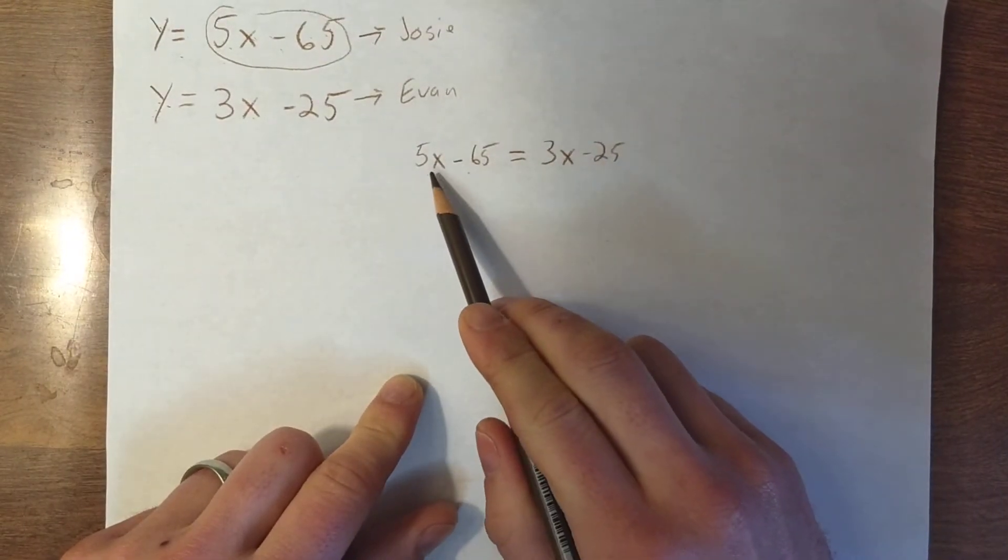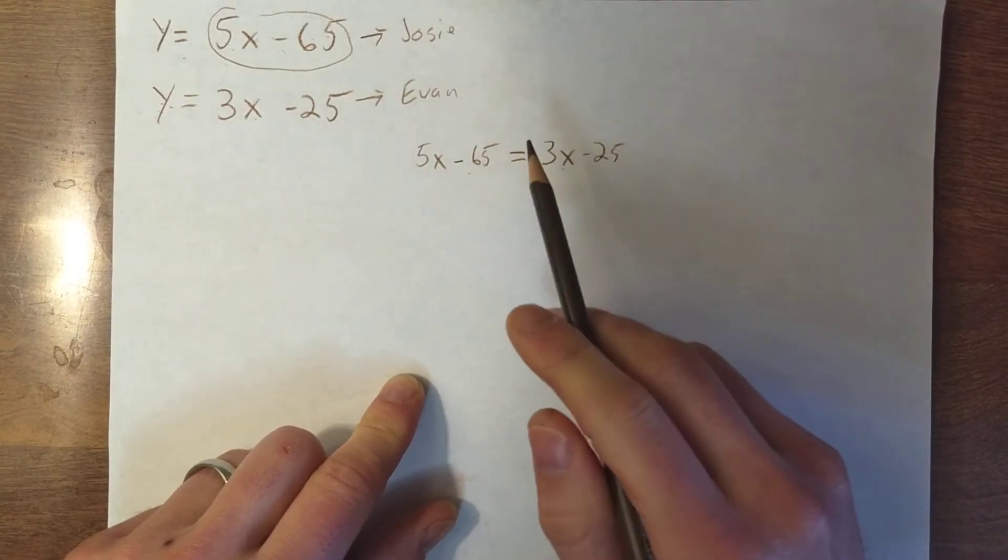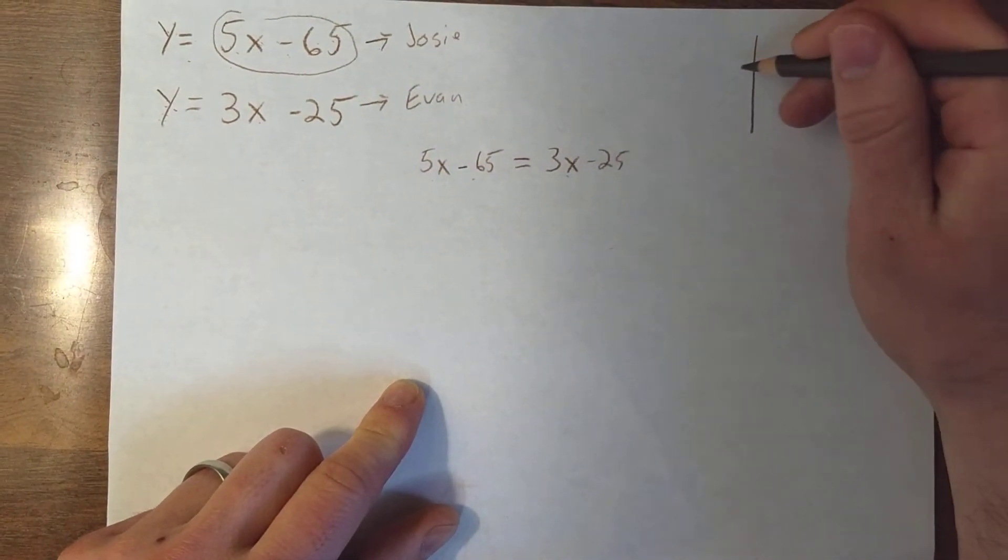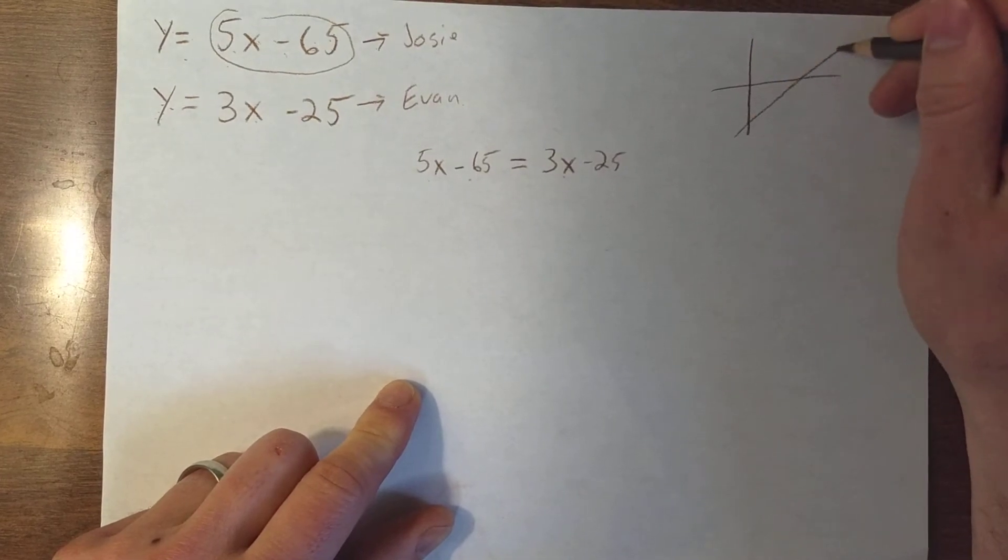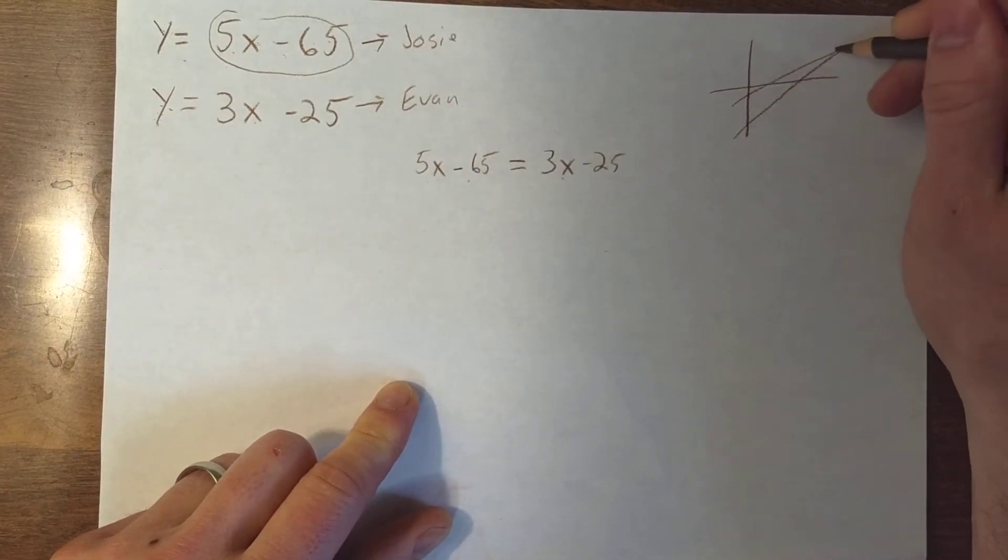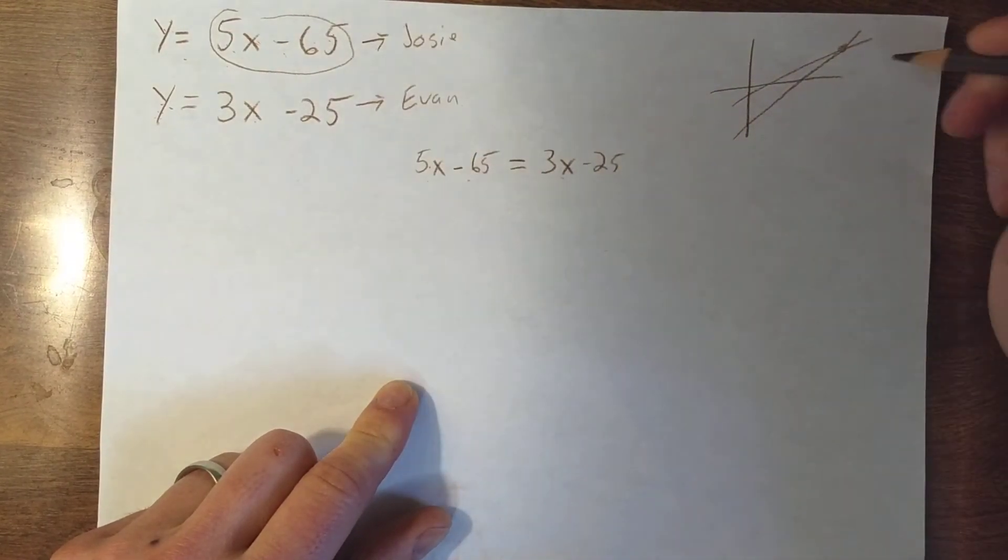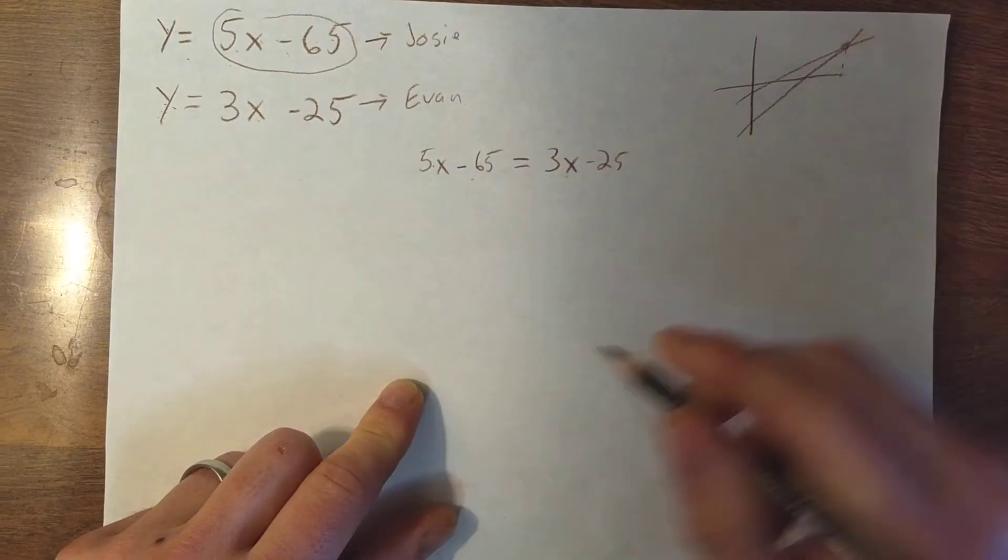And when I solve for this x, that is going to be the x value at that point of intersection. If we remember our graph, there's Josie's line, there's Evan's line, and they meet somewhere out here. What we're going to solve for this x is going to be that x value at that point of intersection.